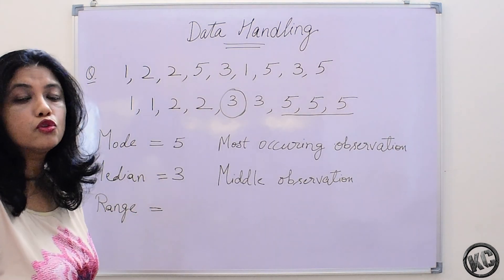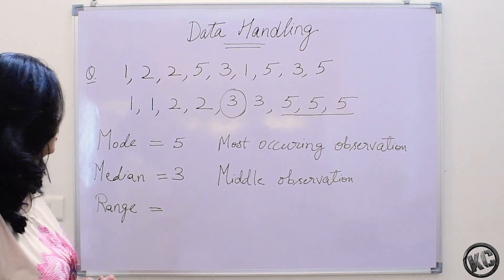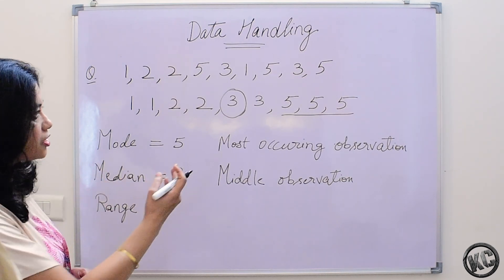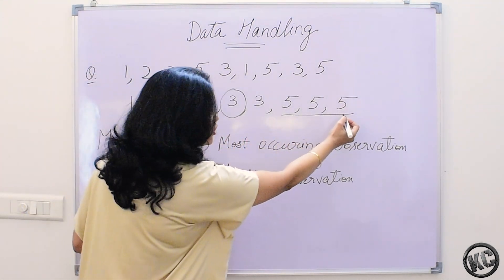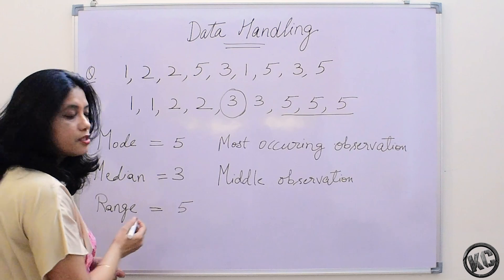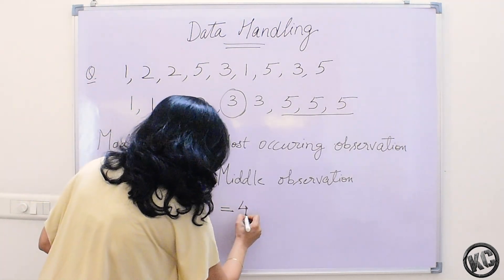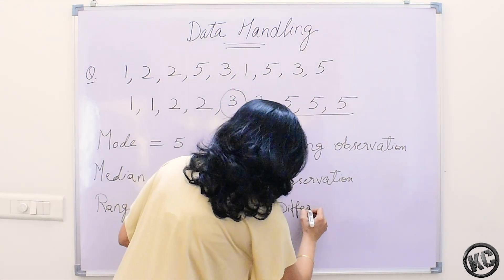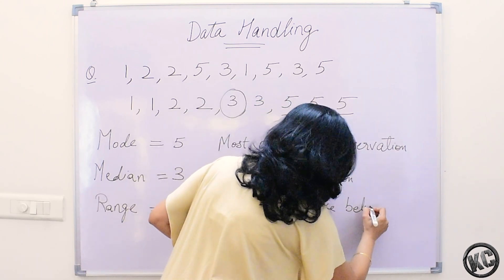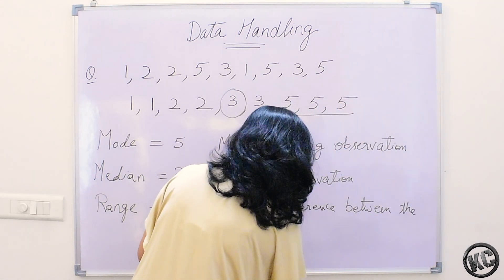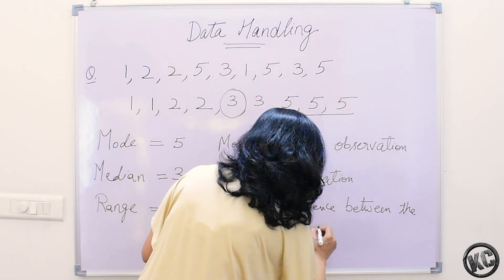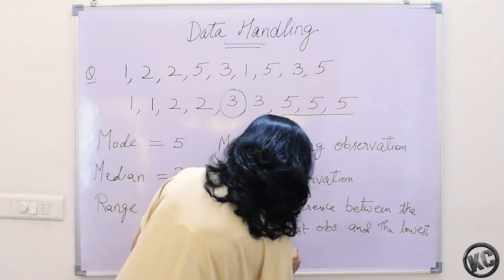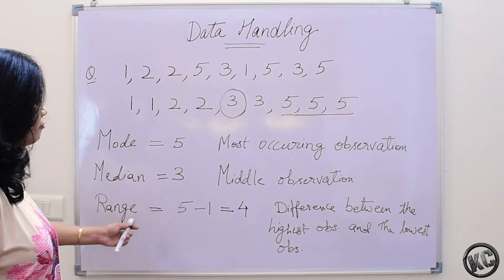These are called representative values, or also called measures of central tendency. Another representative value is the range. Range means the difference between the highest observation and the lowest observation. Highest observation here is 5 and the lowest observation is 1. So 4 is the range of the data — the difference between the highest observation and the lowest observation.